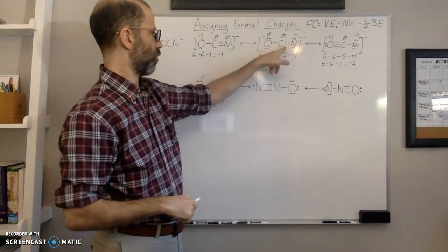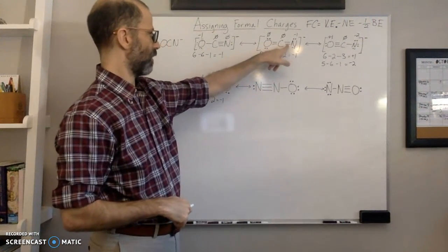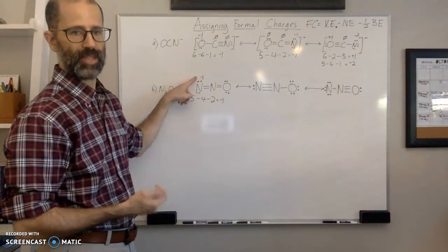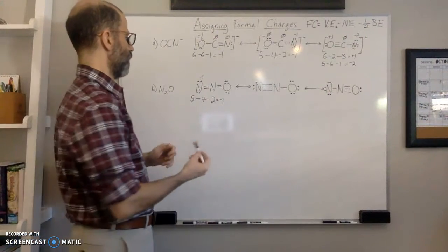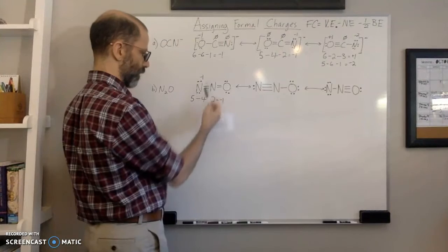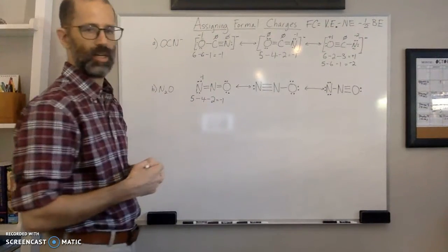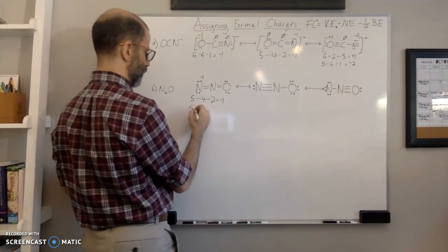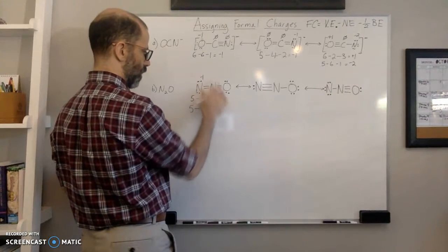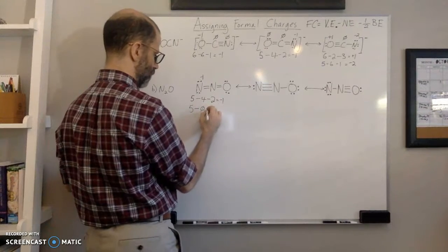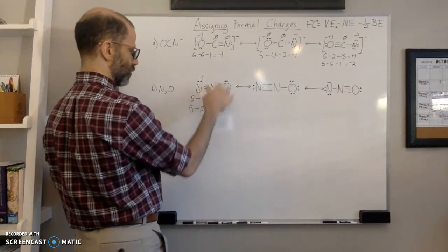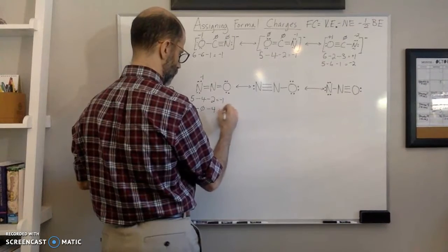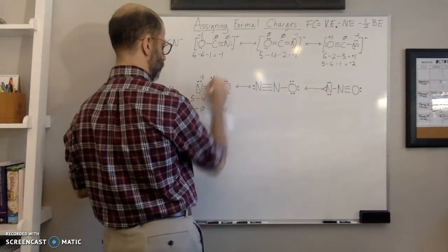This nitrogen has four bonds and no lone pairs, which does not fit the bonding pattern either. So we calculate: five valence electrons for nitrogen, minus zero non-bonding electrons, minus four (one from each of four bonds). That equals positive one. So this nitrogen has a plus one formal charge.